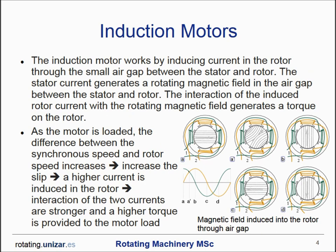Let's review how both motors work. The induction motor works by inducing current through the small air gap between the stator and the rotor. The stator current creates a rotating magnetic field in this air gap, and the interaction of the induced rotor current with the rotating magnetic field generates a torque on the motor. The induction motor is self-regulating, meaning it can adjust torque to match the load demand without additional regulation equipment. If there is no load on the shaft, the rotor runs at a speed slightly less than synchronous speed — this difference is called the slip.